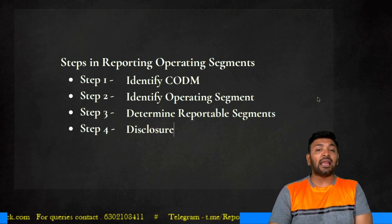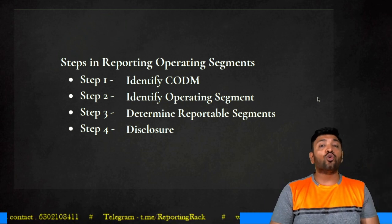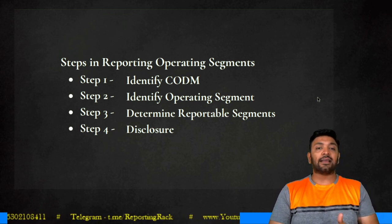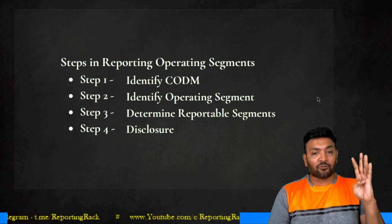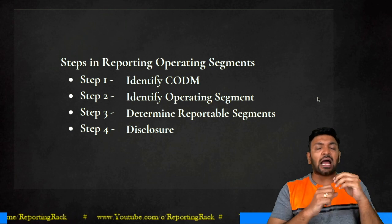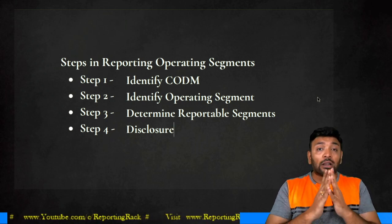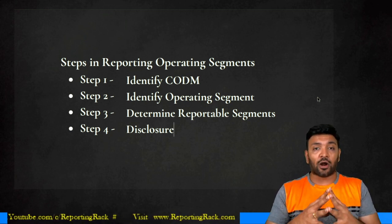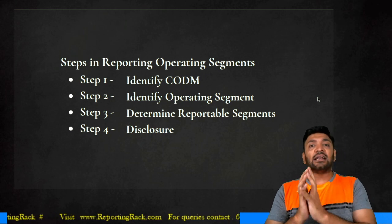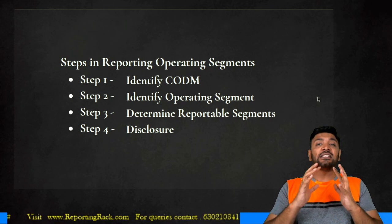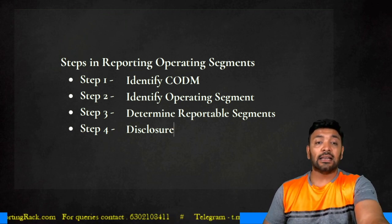There is a four-step process for reporting operating segments. Step one: identify the CODM — who is your chief operating decision maker? Step two: identify operating segments. Step three: determine what are your reportable segments. Step four: disclosures necessary. The first three steps will be elaborated upon; disclosures are not the most important for exam purposes.